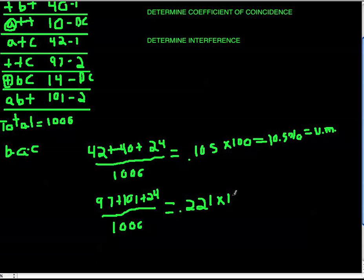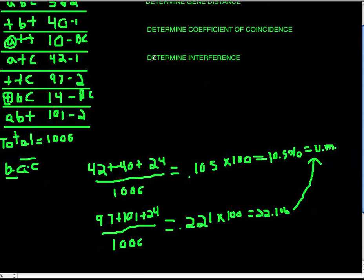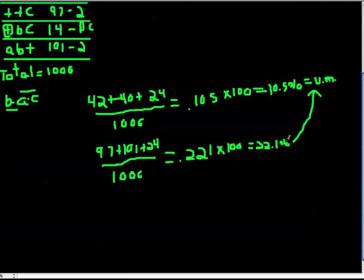Multiply 0.221 by 100 to get 22.1%, or 22.1 map units. This is our second gene distance. To find the total gene distance we add both intervals: 10.5 plus 22.1 equals 32.6 map units.